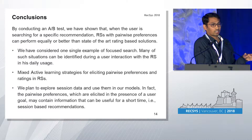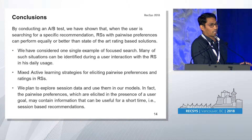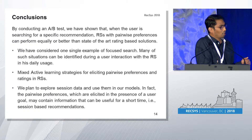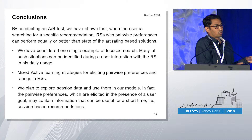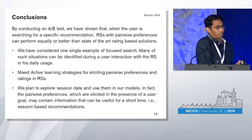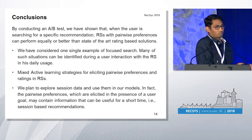Then it might be useful to understand if asking the user to compare with the previously experienced item or asking the user to rate the consumed item is better. The second direction is a mixed active learning strategy, where so far the literature has focused on active learning for rating elicitation. But this work can start a new type of research where you need to elicit both types of preferences.